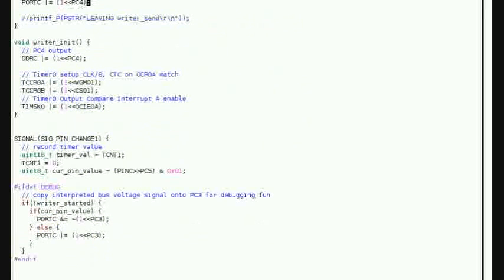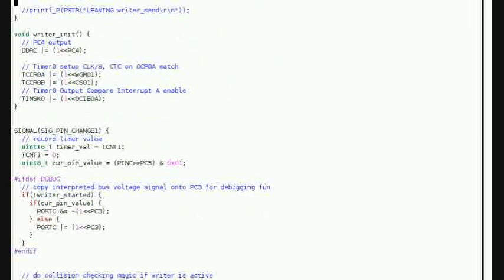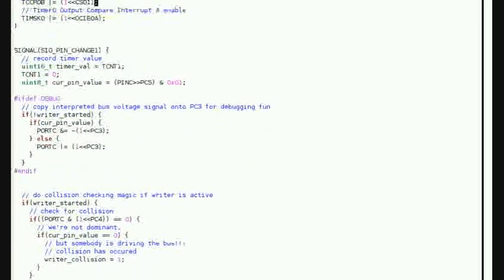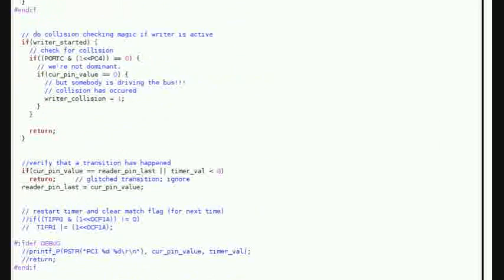When we're trying to read the data from the car, we use the pin change interrupt to watch the voltage changes. When a transition has occurred, we check the timer and decide whether the car was sending a high bit or a low bit.